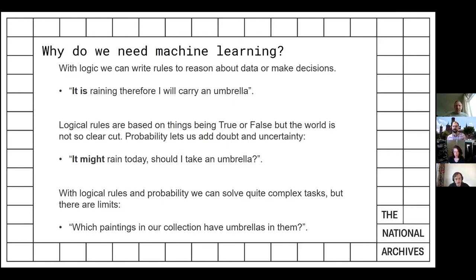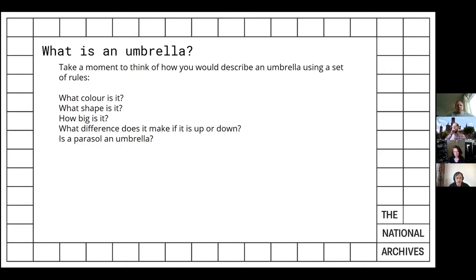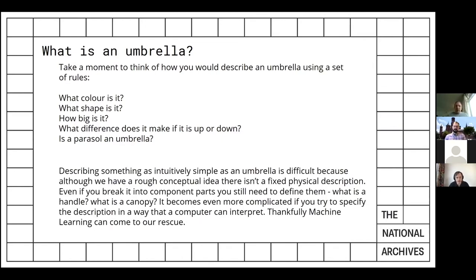Consider identifying paintings that contain umbrellas. How would you build rules around what an umbrella is to help a program decide whether pictures contain umbrellas? Think about what an umbrella looks like, what colour it is, what shape — is a parasol an umbrella? You quickly realize it's very difficult to specify specific rules. This is where machine learning comes into its own: we provide examples of umbrellas and it learns what an umbrella is, rather than us trying to specify all the different types.